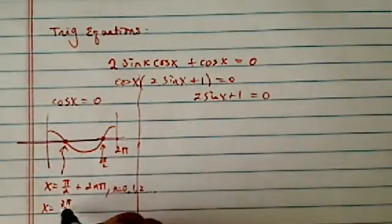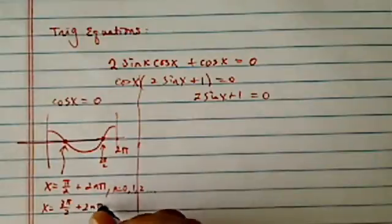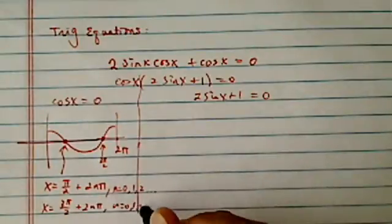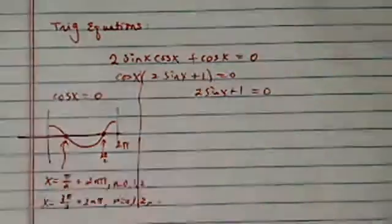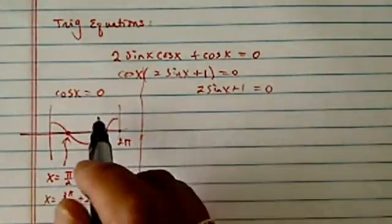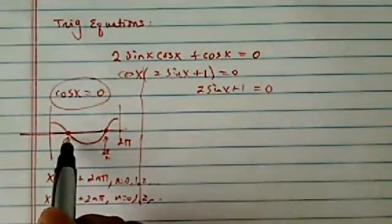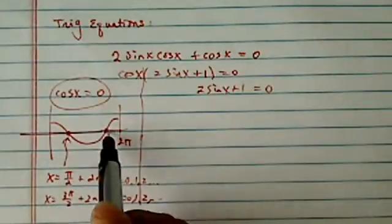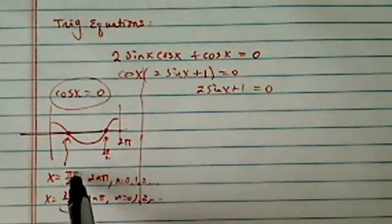Or x equal to 3 pi over 2 plus 2n pi, where n equal to zero, one, two, so on and so forth. So all I did is draw the curve here. Once I have the equation, draw the curve, and then I have two points, one here, one here. And I started writing the solution.